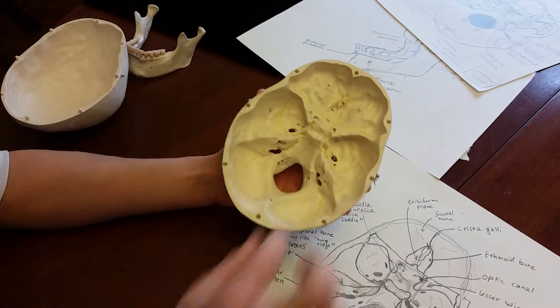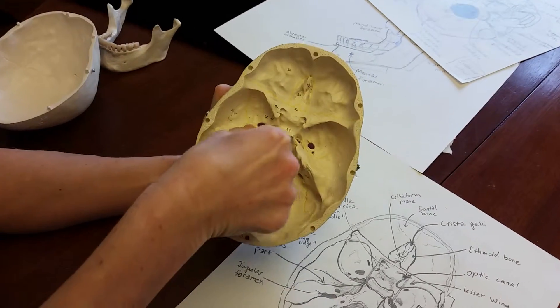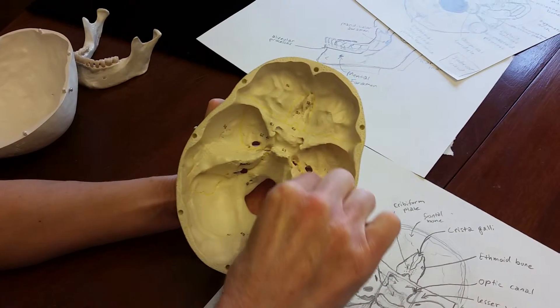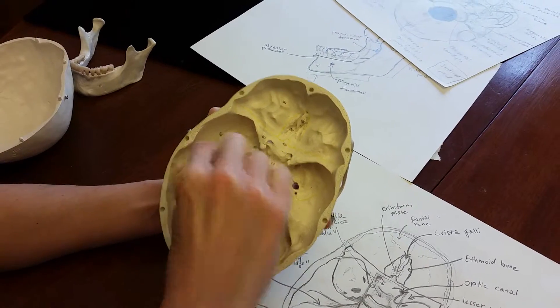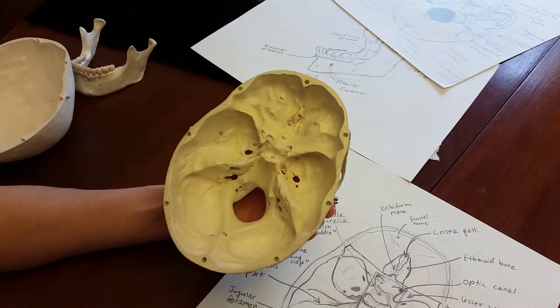You can also see the petrous part of the temporal bone. Those are these rocky ridges that look like little mountain ridges. That is the petrous part of the temporal bone.